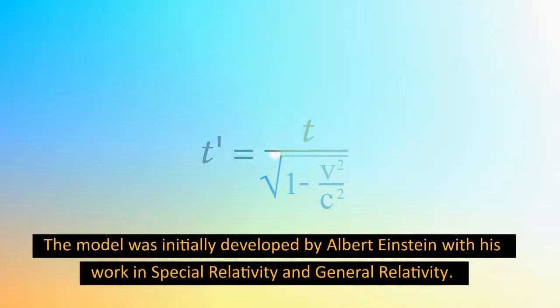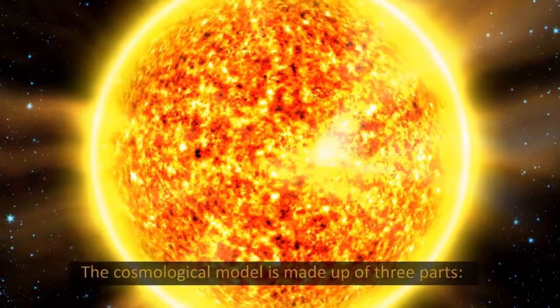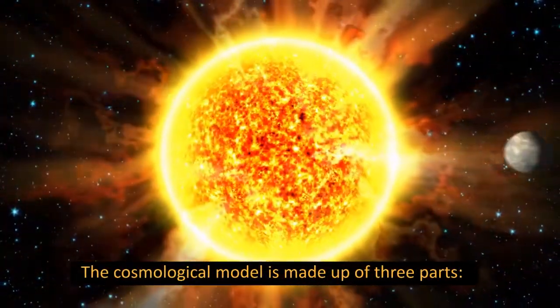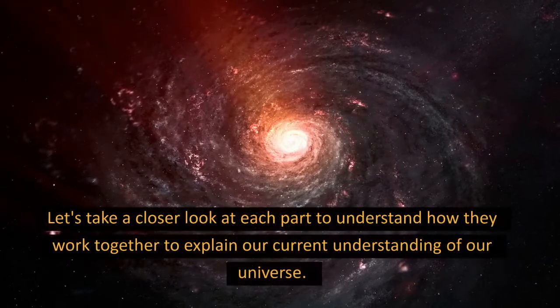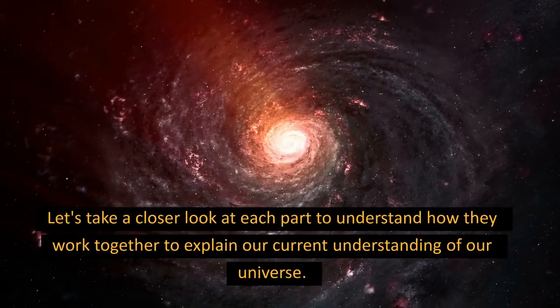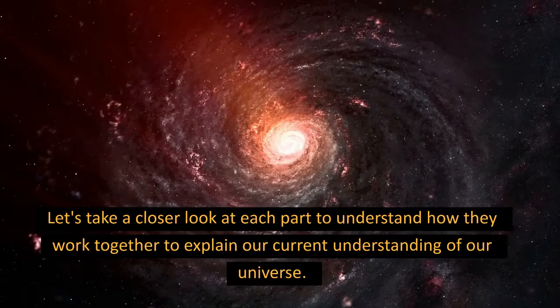The model was initially developed by Albert Einstein with his work in special relativity and general relativity. The Cosmological Model is made up of three parts. Let's take a closer look at each part to understand how they work together to explain our current understanding of our universe.